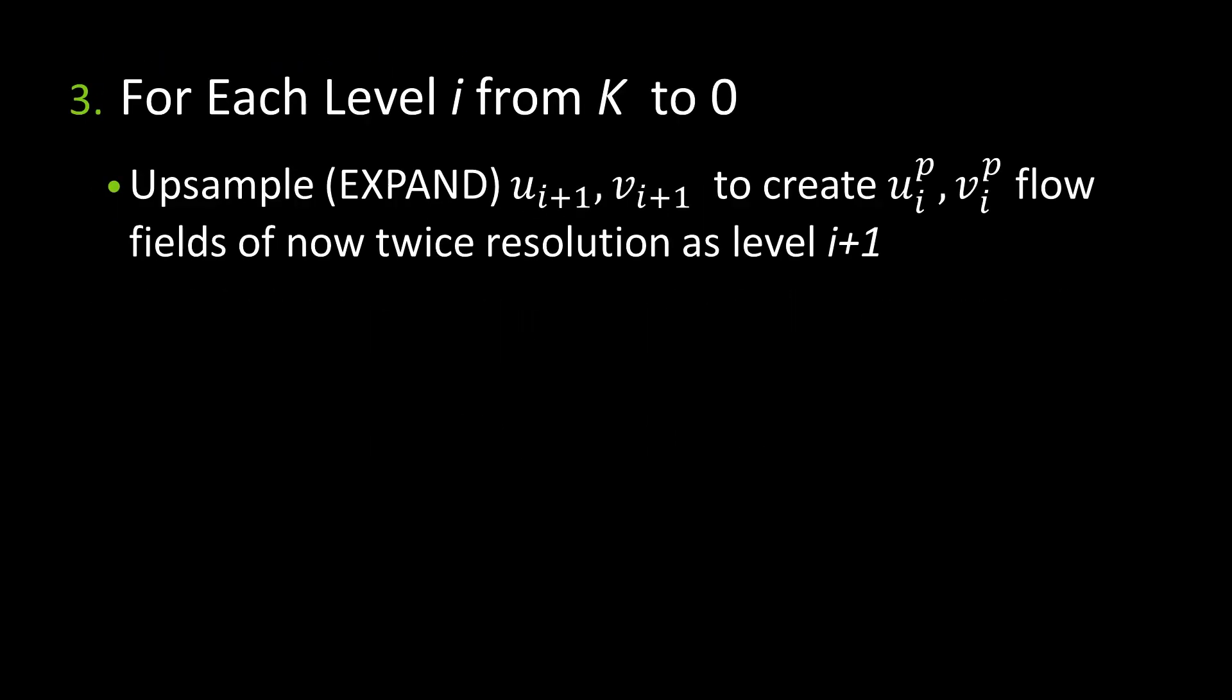So we have to upsample the flow field. That's just to expand it, make it twice as big. And that's now the right size to map from level k to level k of t minus 1 to t. The problem is, if in the previous level, something moved by 1.2 pixels, how far is it going to move now? 1.2 times 2, 2.4 pixels. So when I expand the flow field, which just makes it a bigger size, I also have to multiply it by 2. That's what the next step of the algorithm series is. Multiply UIP and VIP by 2 to get the predicted flow.